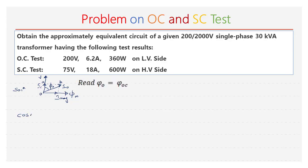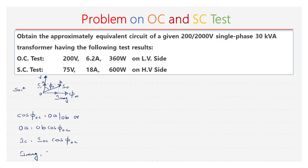From the triangle OAB, we can write cos φ0 is equal to adjacent by hypotenuse, that is OA divided by OB. OA is equal to OB into cos φOC, where OA is nothing but Ic. So Ic is equal to IOC into cos φOC. Similarly, the magnetizing current is given by Im is equal to IOC into sin φOC.